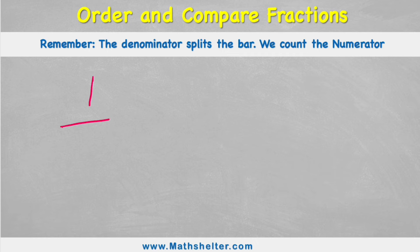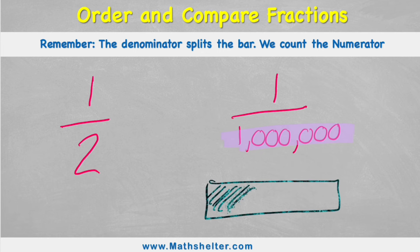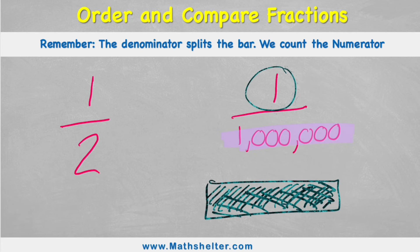For example, if I said to you, you can have one half of my chocolate bar, or you can have one one millionth, which one would you rather have? Well, the one millionth looks massive, doesn't it? Because of this million number. But actually, if you think about it, that means that I've had to chop my chocolate bar into a million pieces. Oh my gosh, can you imagine how small those little pieces would be that I would get, and I'm only getting one of them. Whereas my one half, it means I've chopped my chocolate bar into two equal pieces, and I get one half. So I actually get quite a lot.